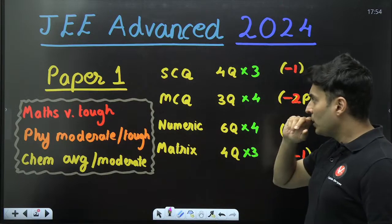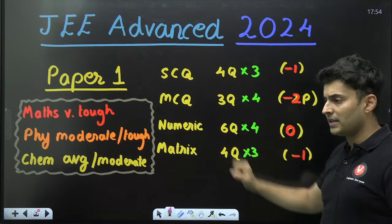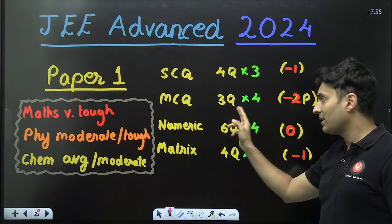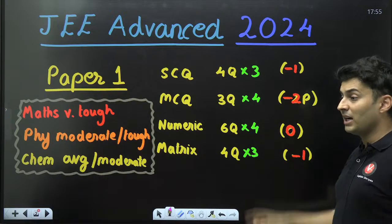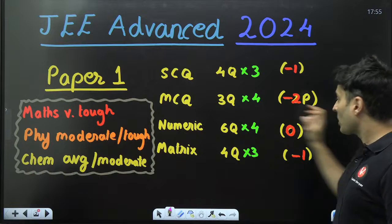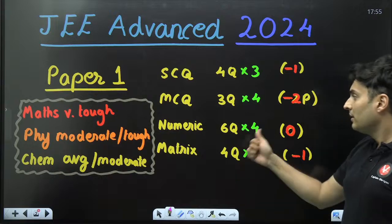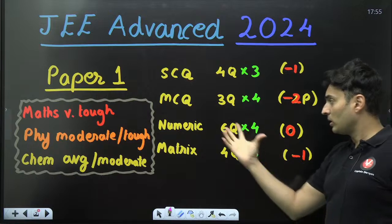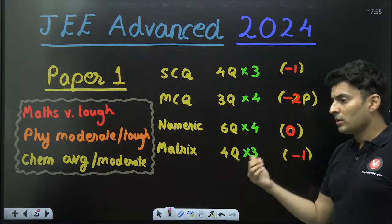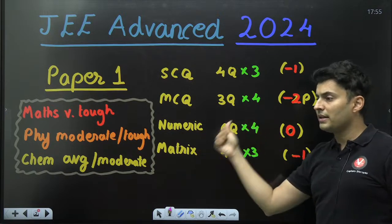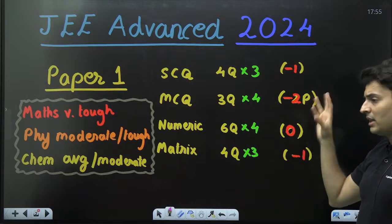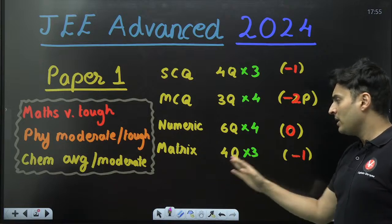In Paper 1, there were single choice questions, multiple choice, and numeric questions — matrix/passage was not asked. Single correct option had four questions, three marks each with negative one marking. Multiple correct options had three questions, four marks each with negative two marks, meaning mistakes cost heavily, though partial marking applies. Numeric had six questions, four marks each with no negative marking — the safest scoring area.